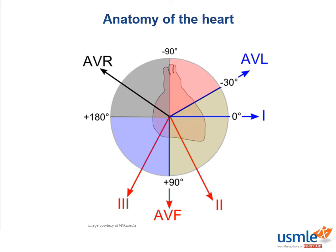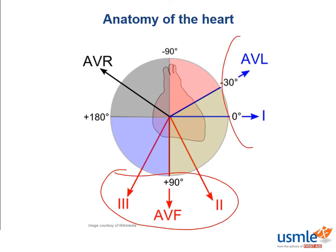Leads 2, 3, and AVF, as many of you probably know, are pointing inferiorly, so we call those the inferior leads. Whereas leads 1 and AVL are pointing laterally, specifically towards the left side, so we call those the lateral leads. And then AVR is doing its own thing, pointing towards the right side.